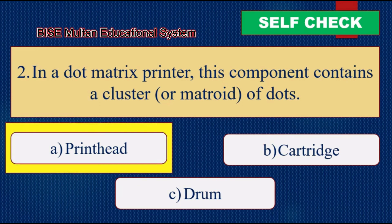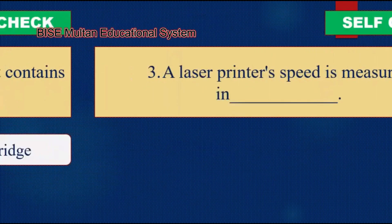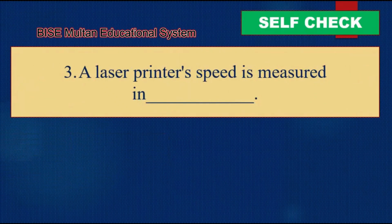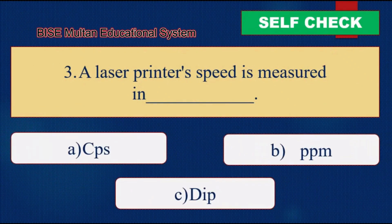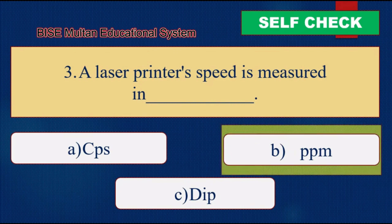Self-Check Question 3. A laser printer's speed is measured in blank. The answer is PPM (pages per minute).